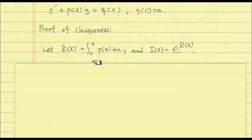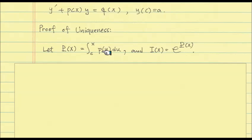Whenever we prove, try to avoid ambiguity. For example, this seems like an antiderivative of little p(x), but here I'm using a definite integral where c is a specifically given number — so this is not just any antiderivative, it's a very specific one. It's a definite integral from c to x. Whenever x is given, this is a specific function. So P(x) is specifically defined, and i(x) is e raised to P(x). This came from the integrating factor.